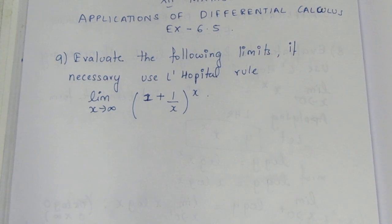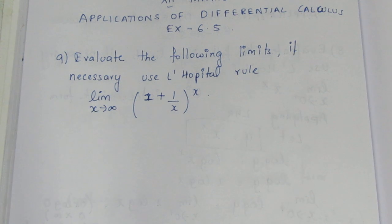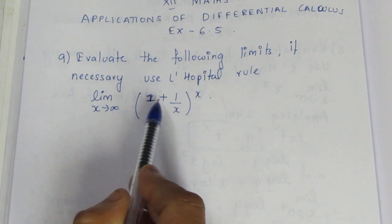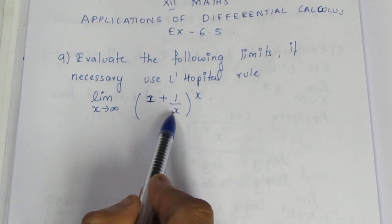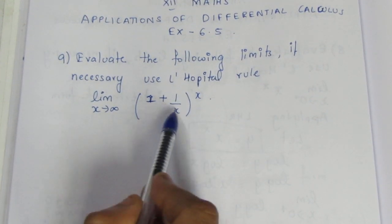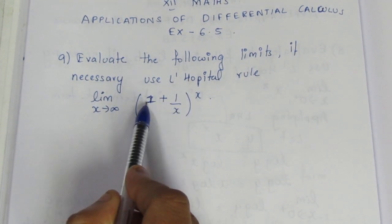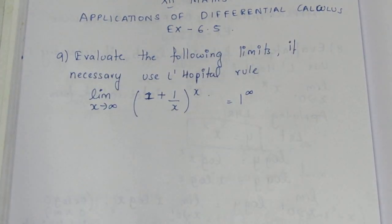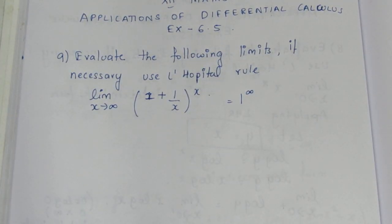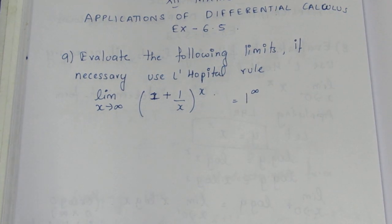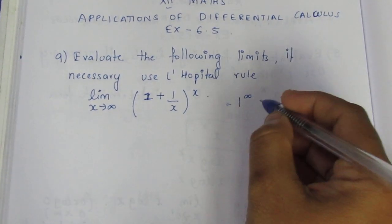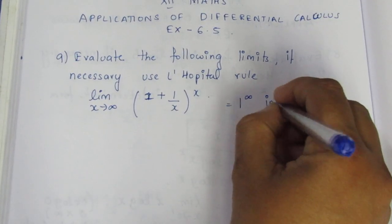So, evaluate. First, substitute the limit value. In case the limit value is an indeterminate form, we follow the L'Hôpital rule. Now we substitute x tending to infinity: 1 by infinity gives 1 plus 0, so this is in the form of 1 power infinity — an indeterminate value.